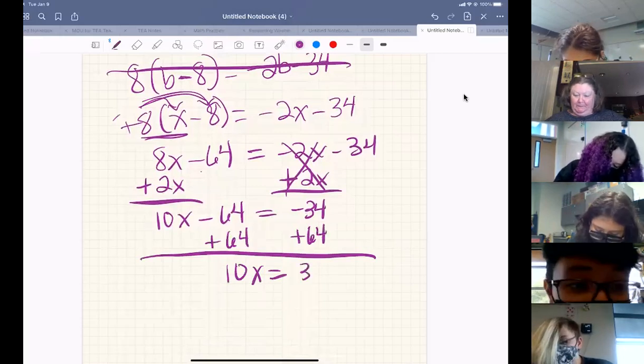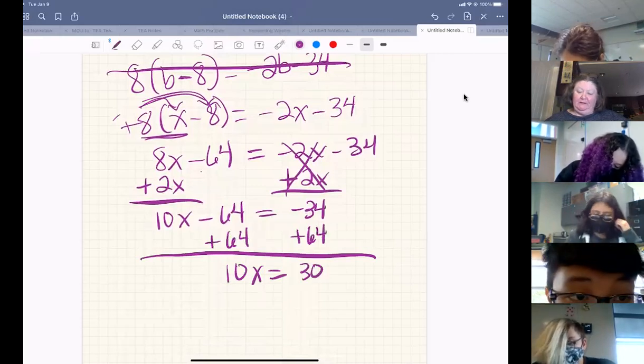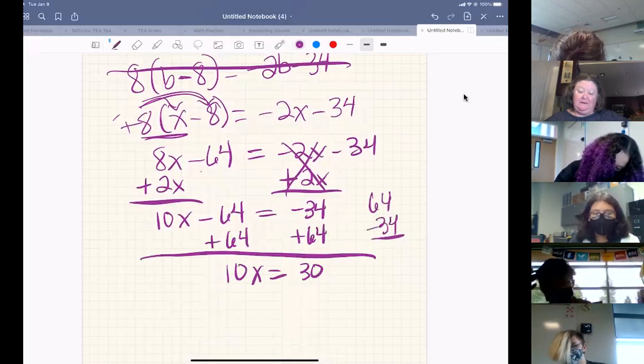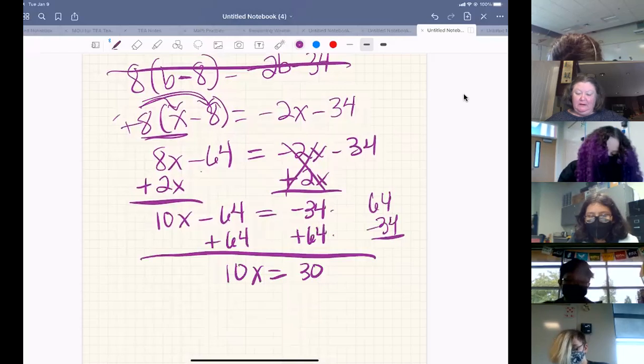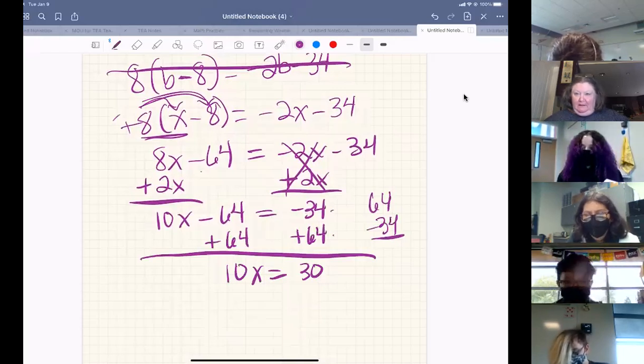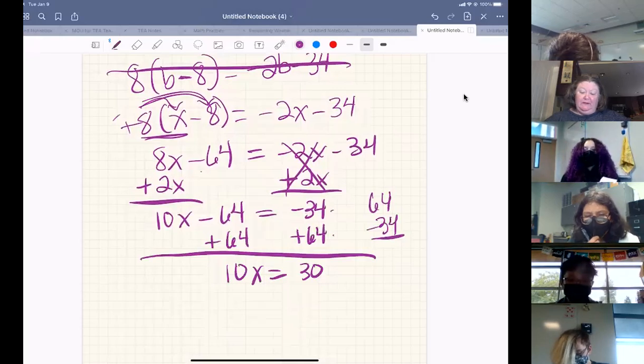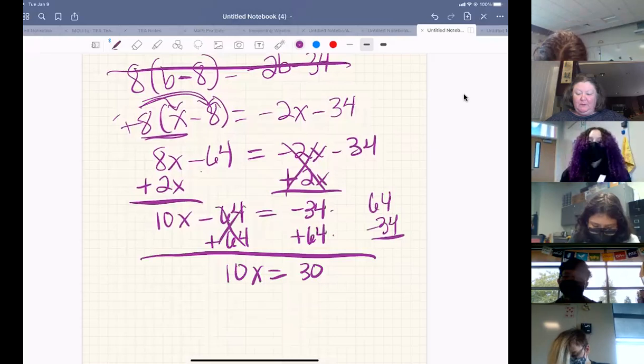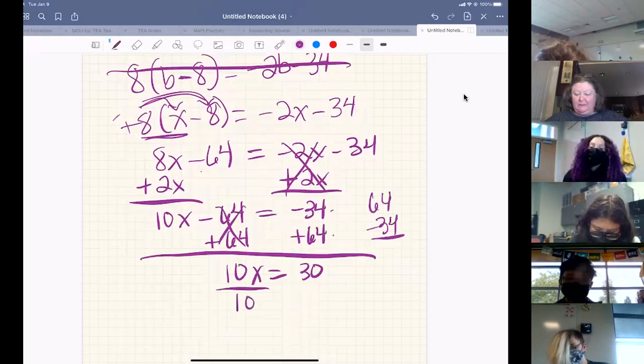Yep, 30. 64 minus 34 is the same as saying -34 + 64. We're looking for the difference there and it's 30. Next step. We've zeroed this out. All that's left is finding that invisible one with the X. So we're going to divide by 10.